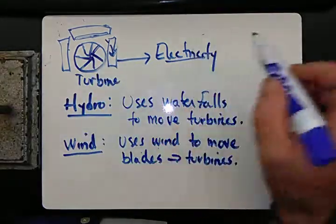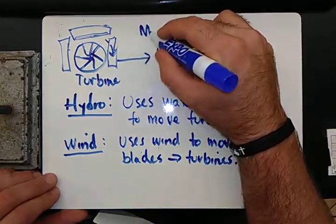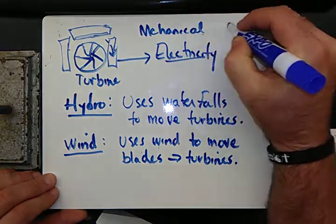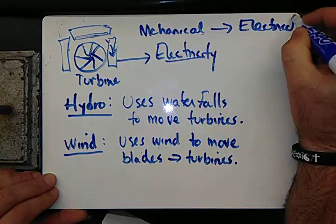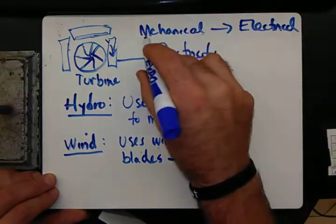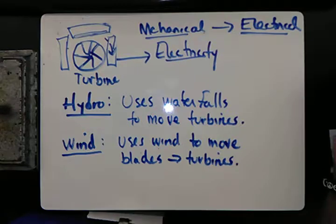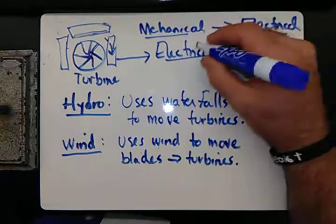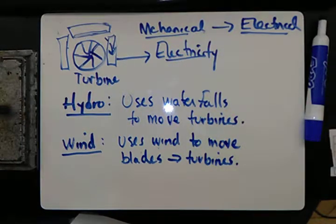We've got to get something to move to produce electricity. So we need to get a mechanical-to-electrical conversion — we convert mechanical energy to electrical energy. I'll be stopping this video periodically to talk about certain things that relate to these two items. Thank you, and have a good day.